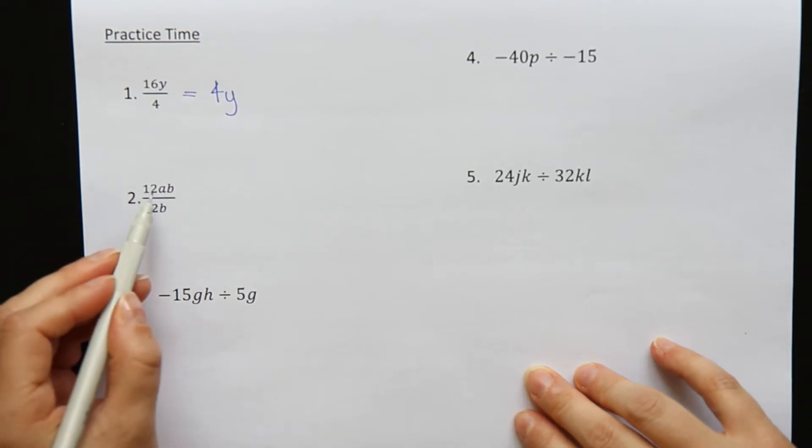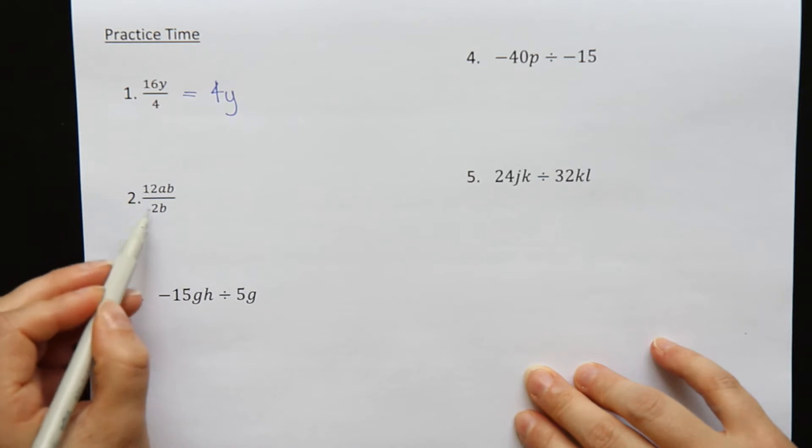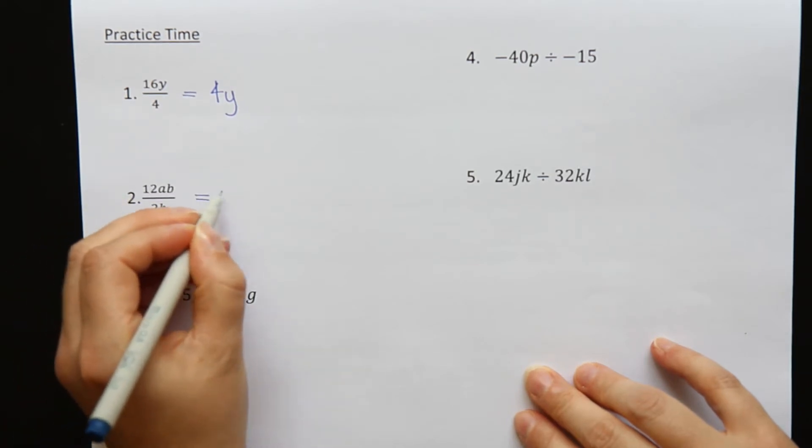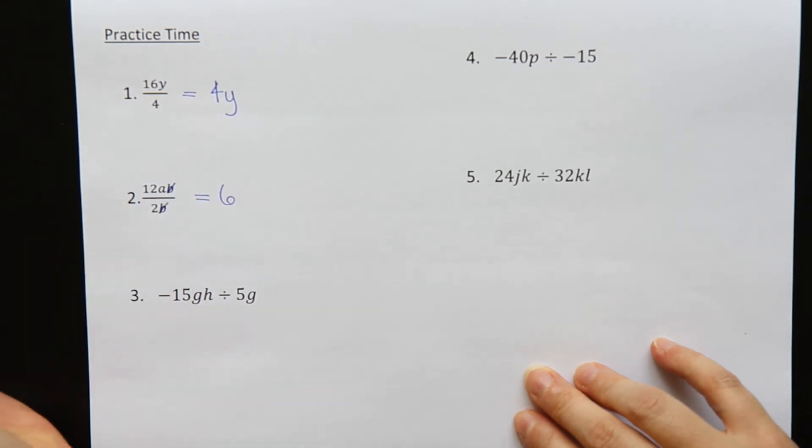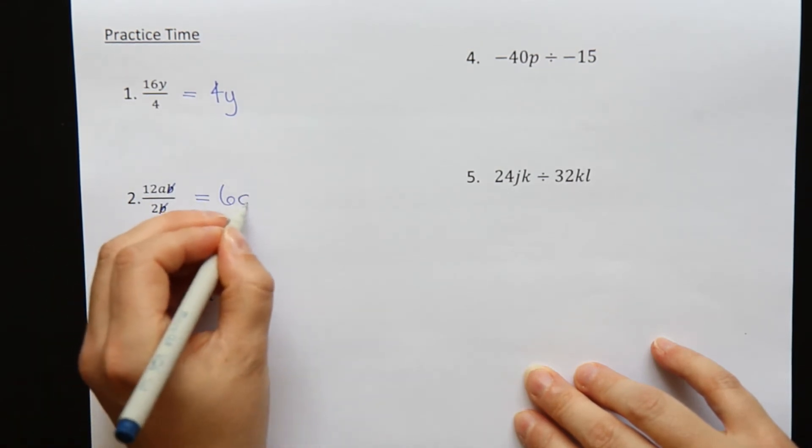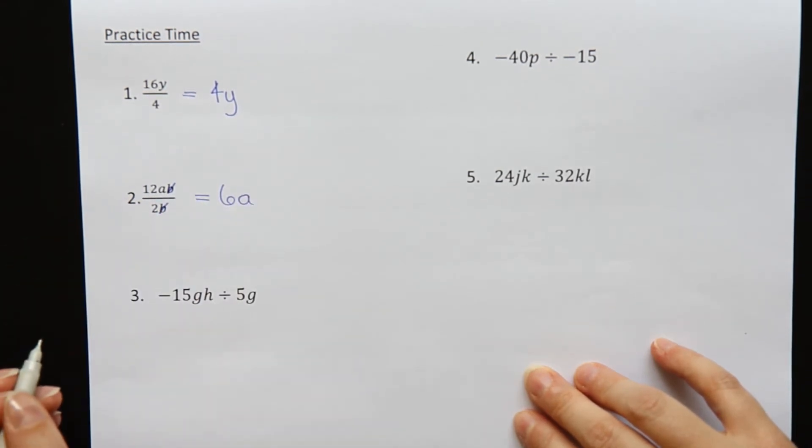Question two. 12ab over 2b. 12 divide by 2 goes 6 times. And B and B will cancel off. So 6a should be your answer.